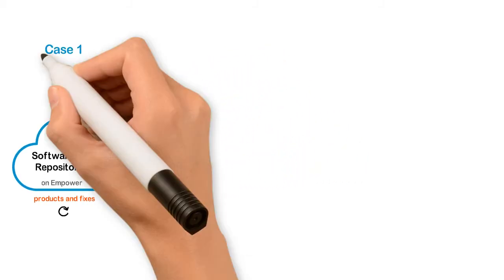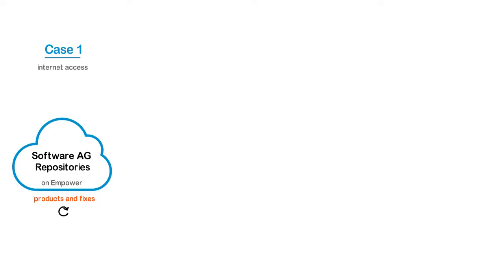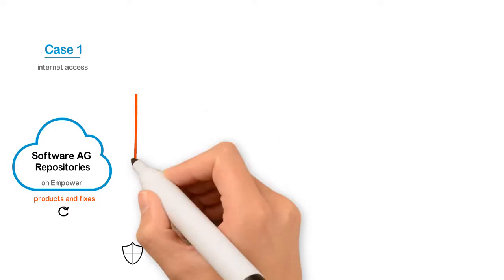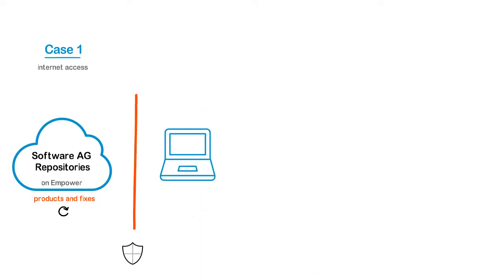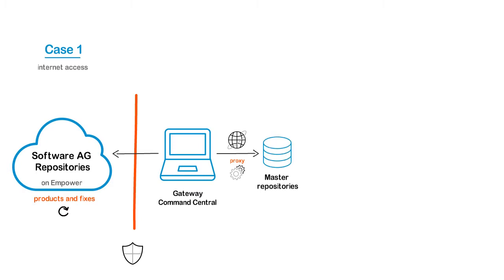Let's look at Case 1: how to use repositories when your network has access to the internet. Install Command Central behind the company firewall and set it up to access the internet. If you're using a proxy server, configure Command Central and the local platform manager to connect to the internet through the proxy server. Let's call this the Gateway Command Central. From this Command Central, you connect to the Software AG repositories on Empower using your Empower credentials. The repositories are registered in Command Central as the master repositories. Now you can use the master repositories to install products and fixes on the servers in the network with internet access.